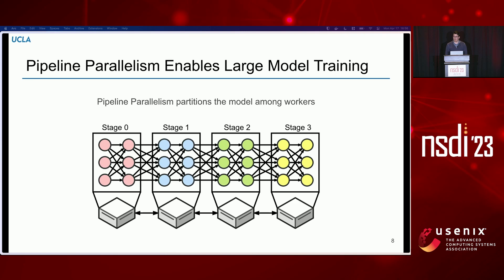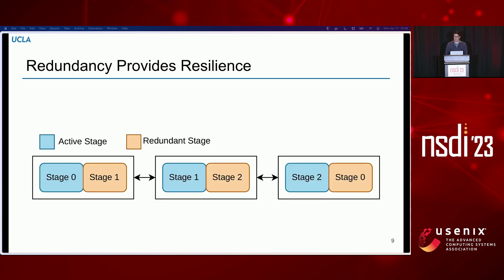In our case, we're targeting pipeline parallelism specifically, in which the different stages of a model are broken up and assigned to each different node in the system, and intermediate gradients and activations are communicated to continue training. Our choice is to turn to redundancy, in which we duplicate one stage of the model — we create at least one extra stage such that we can fall back to it in the case of a failure. Here you can see that each node in the pipeline is given one active stage and one redundant stage, so if the second node fails, the first node can simply take its redundant stage as its active stage, reroute the pipeline, and continue training with very minimal overhead.